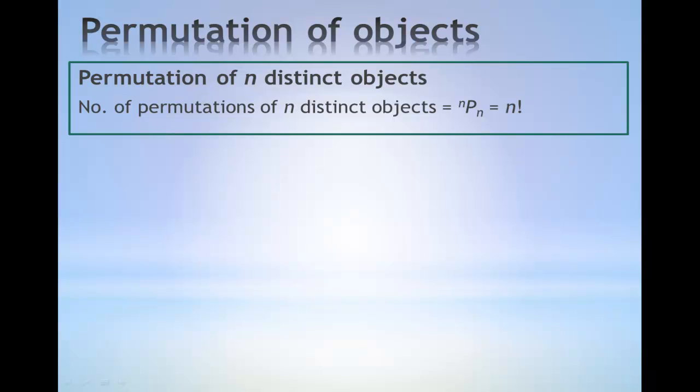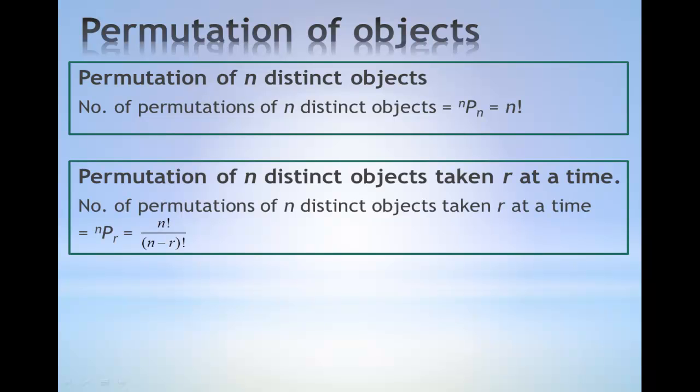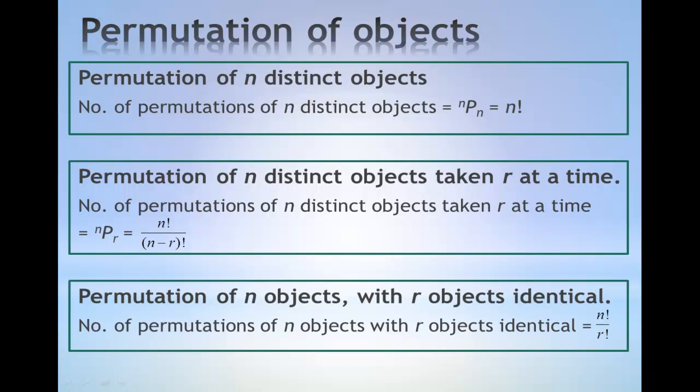The number of permutation of n distinct objects is given by the notation nPn and has the value n factorial. The number of permutations of n objects taken r at a time has the notation nPr and has the value n factorial over n minus r factorial. The number of permutations of n objects with r objects identical is given by n factorial over r factorial.